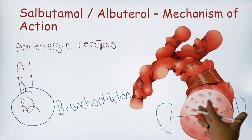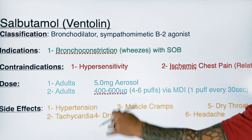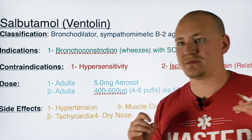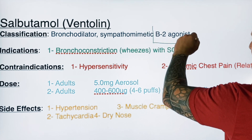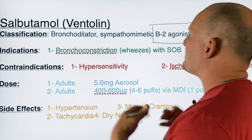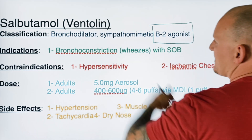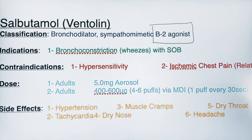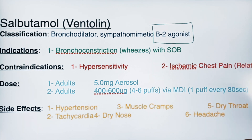That is the quick and dirty understanding of salbutamol's mechanism of action. This medication is a bronchodilator and a sympathomimetic, meaning it affects the sympathetic nervous system but primarily targets beta-2. It is selective to beta-2, and the indication is bronchoconstriction — wheezing and shortness of breath due to asthma or COPD — creating significant bronchoconstriction.